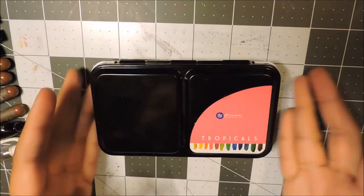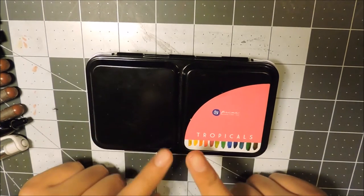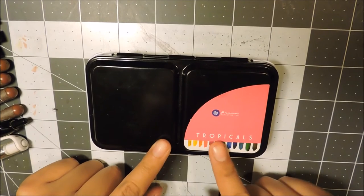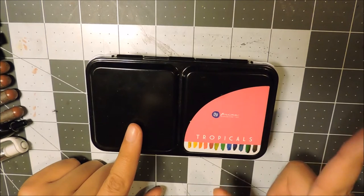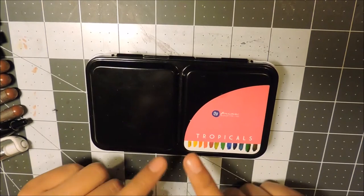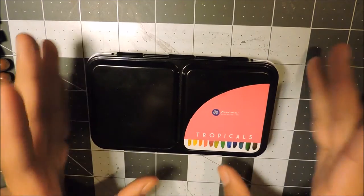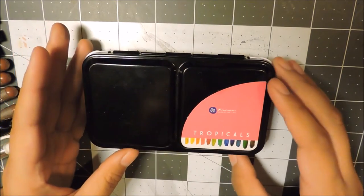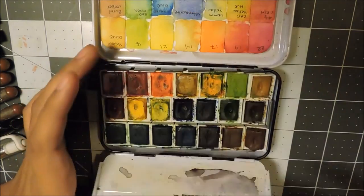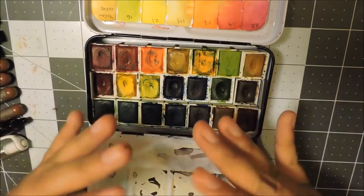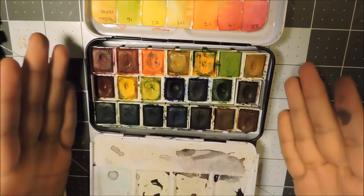These are my babies. This is the Prima Marketing tropical set. When I first bought this they only had three: tropicals, classic, and decadence. I believe they have two more sets but this is the one I use, tropicals.